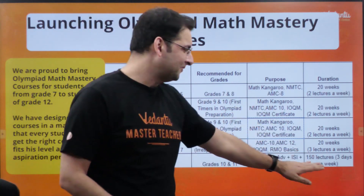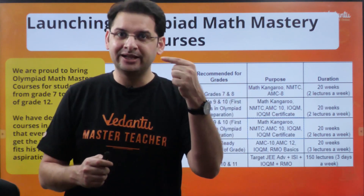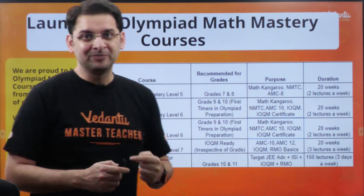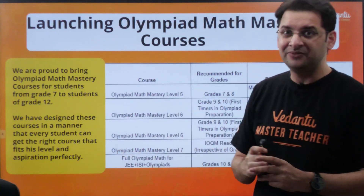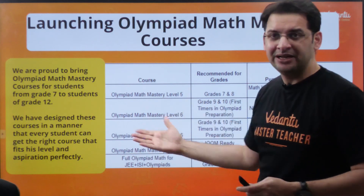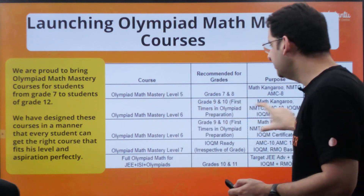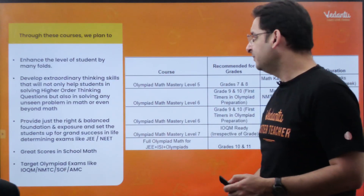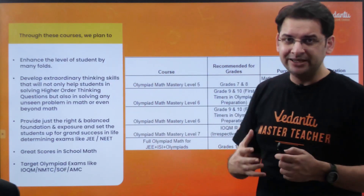The JEE/ISI master course is 150 lectures, three days a week, starting in October and ending in December of next year. So this is the plethora of courses that we have, apart from Levels 8 and 9 which have not been mentioned here. In this video, we are going to focus on discussing Olympiad Math Mastery Level 6 — its purpose and ideology.